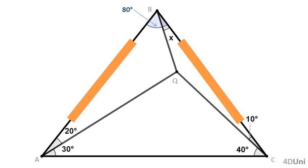We see that we cannot calculate x just using basic relations of angles, so an alternative method is needed. There are some problems that allow us to get a solution using auxiliary lines. In some cases, when we have to calculate an angle, those lines are used to create isosceles and/or equilateral triangles.